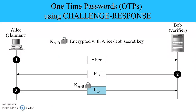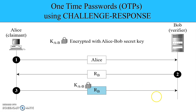Here I show one example of how we can use encryption as a one-time password. Alice, when she wants to authenticate, sends her ID to verifier Bob. Bob throws a random number R_B to Alice, and Alice will encrypt this random number with a shared secret key between Alice and Bob, represented by K_AB. Bob can then verify whether Alice has responded correctly to the challenge by decrypting using key K_AB.